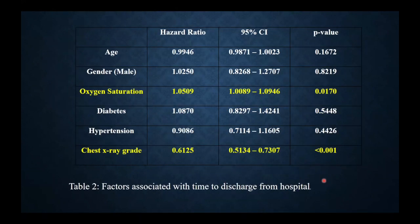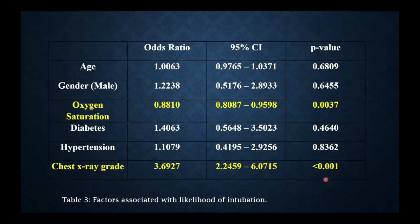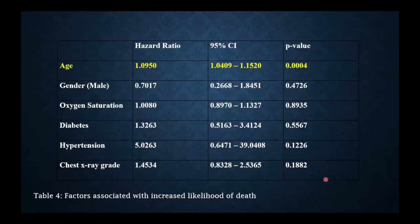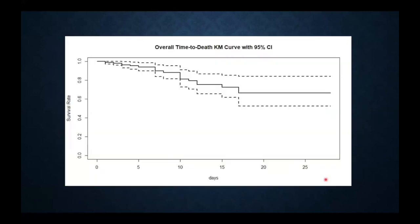Regarding statistical analysis, the chest X-ray was the most significant factor with regard to time to discharge from the hospital. Oxygen saturation was also important. The likelihood to become intubated — chest X-ray grade — was statistically significant; oxygen saturation was also important, while hypertension, diabetes, male gender, and age were less significant. With regard to likelihood to pass away from the disease, age was the most significant risk factor. 20 of the 410 patients we looked at passed away.